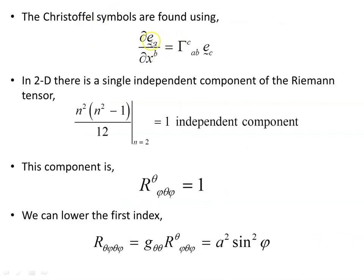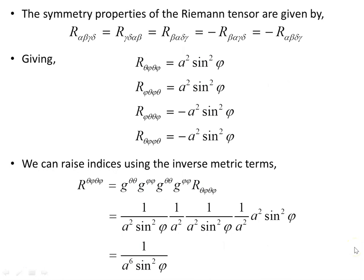The Christoffel symbols are found from dE_A/dx^B = Γ^C_AB E_C, and this gives us our Christoffel symbols. In two dimensions, there is a single independent component of the Riemann tensor — a fact covered in another video on the symmetry properties of the Riemann tensor. That component is R_φθθφ, and we can lower the first index using the metric to obtain the fully covariant form.